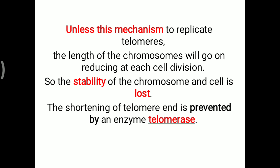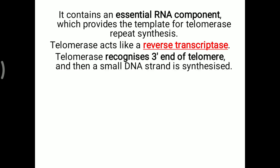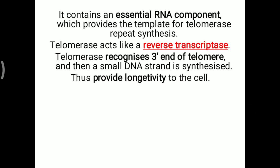The shortening of the telomere end is prevented by the enzyme telomerase. This telomerase contains an essential RNA component, which provides the template for telomere repeat synthesis. Telomerase acts like a reverse transcriptase. Telomerase recognizes the 3' end of the telomere — the end portion on the parent strand — and then a small DNA strand is synthesized. Telomerase thus provides longevity to the cell and maintains cell stability.